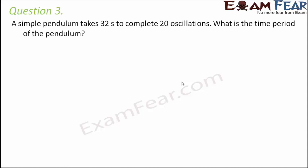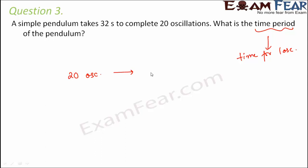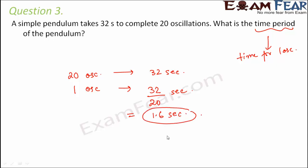Question number three: a simple pendulum takes 32 seconds to complete 20 oscillations. What is the time period of the pendulum? Time period is the time taken for one oscillation. For 20 oscillations it takes 32 seconds, therefore for one oscillation it would take 32 divided by 20 seconds, which equals 1.6 seconds. So the time period of the pendulum is 1.6 seconds.